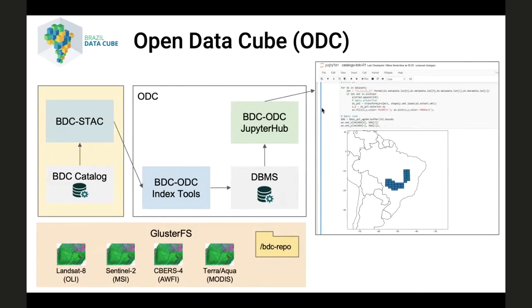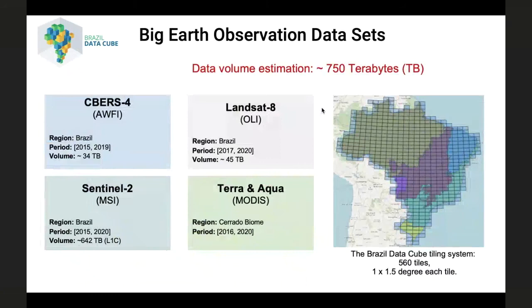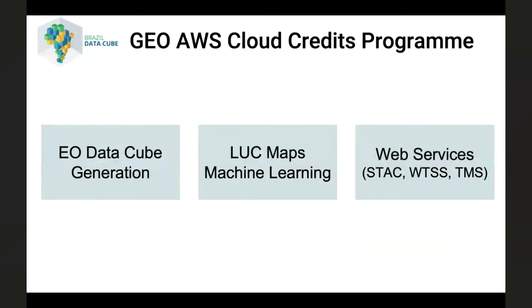The volume of the input image collections used in the project is around 750 terabytes. From these datasets, we also derived surface reflectance and then the data cubes. We are using a cloud platform to address the need for data volume and data processing. Regarding the experience with the cloud, we have been developing tools in the context of the GEO AWS cloud credits program. This work has been carried out in three fronts: data cube generation, production of land use and cover maps based on machine learning, and the development of general-purpose web services.